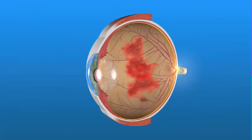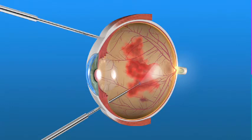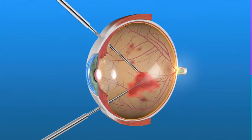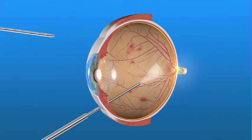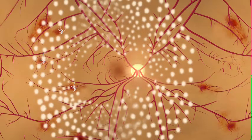Vitrectomy surgery is usually performed in the operating room on an outpatient basis. An operating microscope and small surgical instruments are used to enter the inside of the eye. Blood and scar tissue are removed. At the same time, a laser may be used to prevent further bleeding and abnormal blood vessel growth.